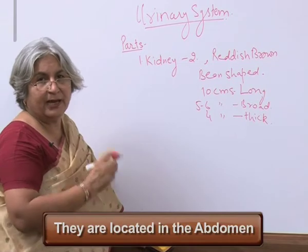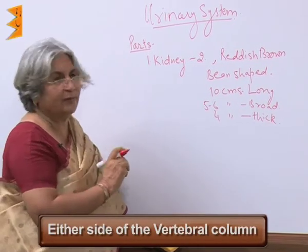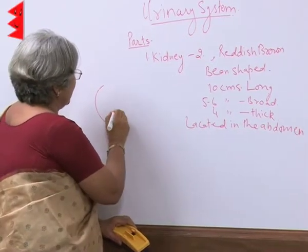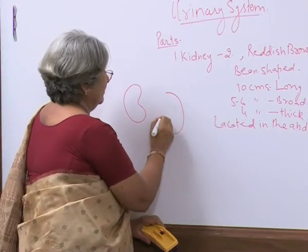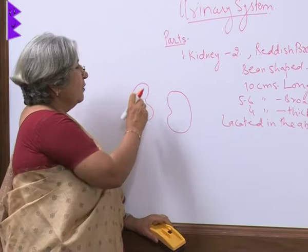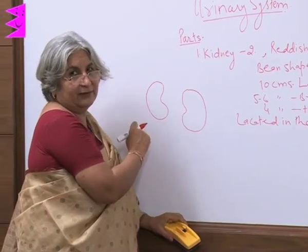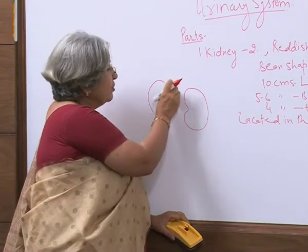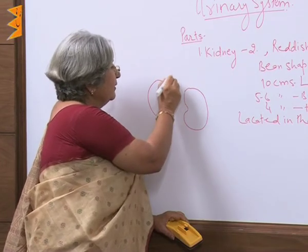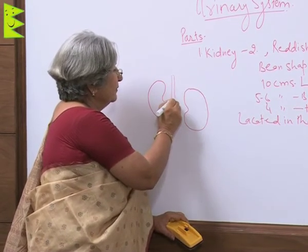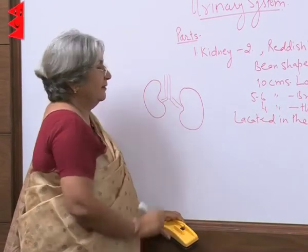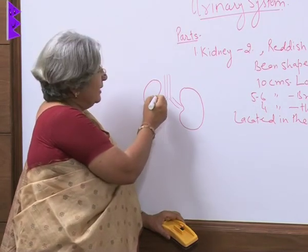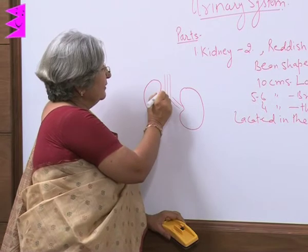They are located in the abdomen on either side of the vertebral column. If we draw the diagram, you must be wondering why I have not drawn them at the same level. The reason is that the left kidney is slightly at a higher level and closer to the center. The convexity is on the outer side while the concavity is on the inner side.